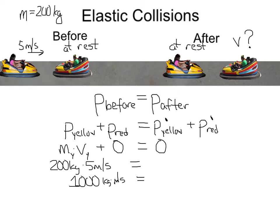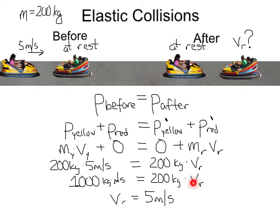We put zero for the yellow cart's momentum after the collision. The momentum of the red cart will be its mass times its velocity. The mass of the red cart is 200 kilograms, and we're solving for its velocity. So 1,000 kilogram meters per second equals 200 times V. Dividing both sides by 200, the velocity of the red cart afterwards is five meters per second. To conserve momentum, the second cart moves off at the same velocity as the first cart in an elastic collision.